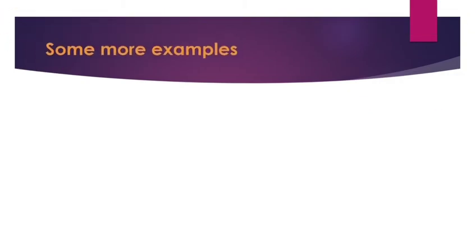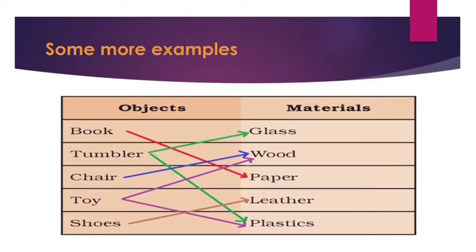Here are some more examples. There is a list of objects on the left-hand side and the materials they are made of on the right-hand side. A book is made out of paper, a tumbler is made out of glass or plastic, a chair is made out of wood, a toy is made from wood or plastic, and shoes are generally made out of leather. Whatever objects you see around you are made out of some material or other.